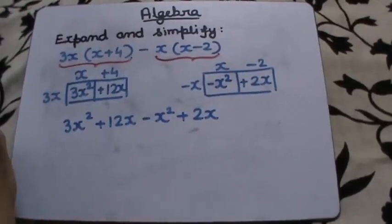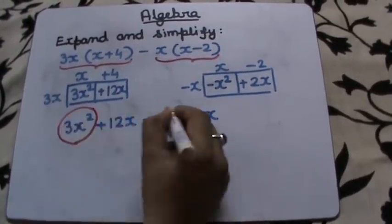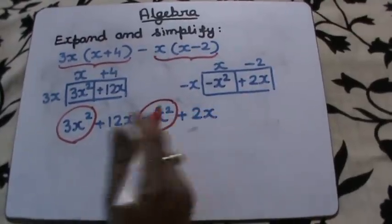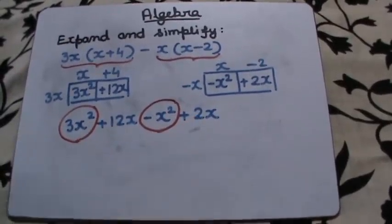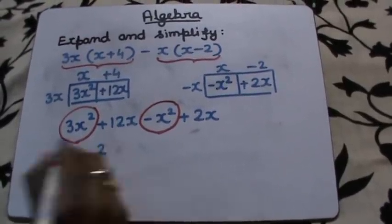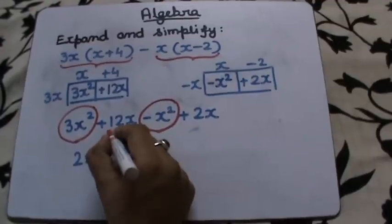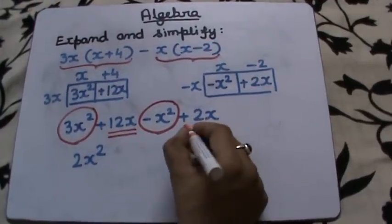Now let us look at the like terms. These two are the like terms, and 3x² minus x² which means 2x², and the other pair of like terms is this part and this part.